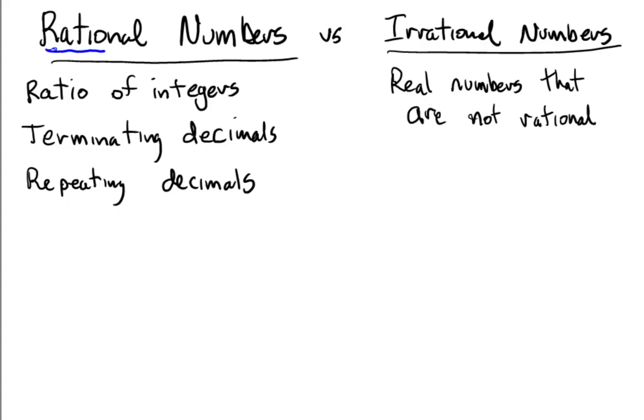So if a rational number is a ratio of integers, that means it could be, for example, two-thirds. Or remember integers can be positive or negative, so it could be negative one-half. So those are examples of rational numbers.